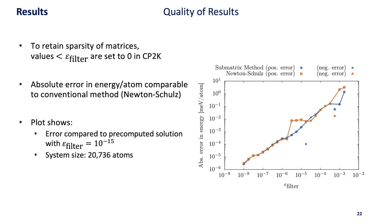Here we see the absolute error per atom depending on the epsilon filter in orange for the conventional Newton-Schulz approach and in blue for our submatrix method. We see it behaves very similarly, so there's not a big additional error introduced by the submatrix method.